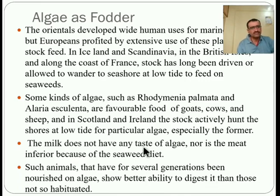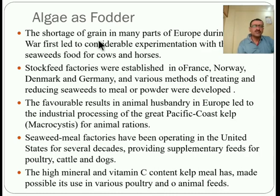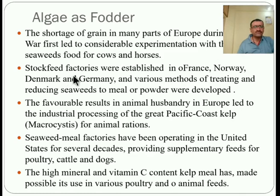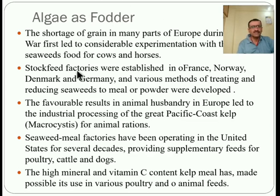Animals that have for several generations been nourished on algae show a better ability to digest it than those not so accustomed. During World War I, shortages of grain in many parts of Europe led to considerable experimentation with the use of seaweed as food for cows and horses. Stock feed factories were established in France, Norway, Denmark, and Germany, and various methods of treating and reducing seaweed to meal or powder were developed.